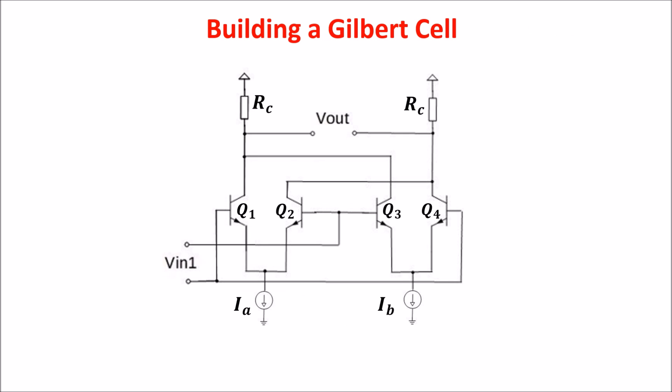Now we add another differential amplifier cross-connecting the inputs and connecting the output the way you see in the schematic. The two differential amplifiers are biased by the tail currents Ia and Ib. If the transistors are matched and Vin1 equals zero, the tail currents split equally on the branches of the differential amplifier, so the voltage drops on the resistance RC are equal no matter the value of the tail currents, and Vout equals zero if the input voltage is zero.